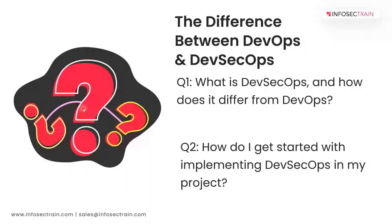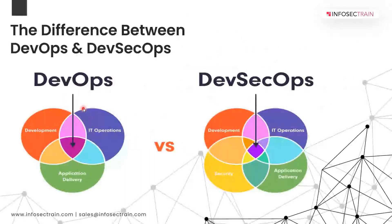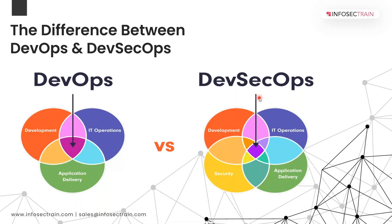The first thing is the difference. DevOps is all about combining development, application delivery, and IT operations. When you collaborate your development team and operations team, that eventually results in application delivery — that is DevOps. On the other side, DevSecOps adds security into that mix: development, IT operations, security, and application delivery. You are bringing security as an additional stage.